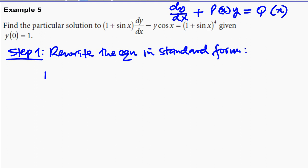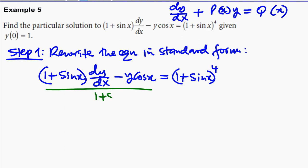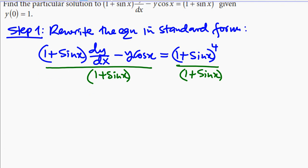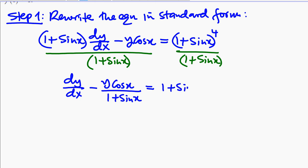We have 1 plus sin x times dy over dx minus y cos x, which is equal to 1 plus sin x to the power of 4. We can divide both sides by 1 plus sin x to write this equation into standard form. So what we end up with is dy over dx minus y cos x over 1 plus sin x, which will be equal to 1 plus sin x cubed.